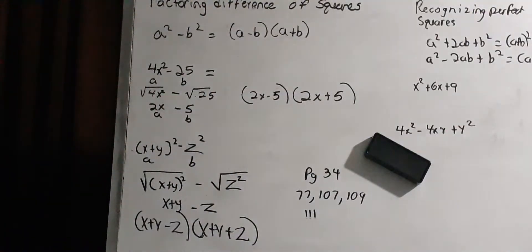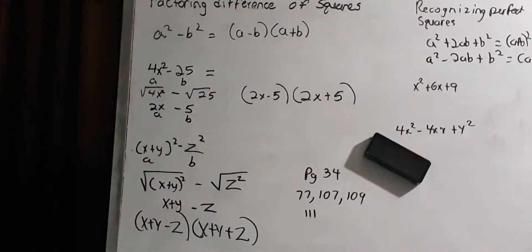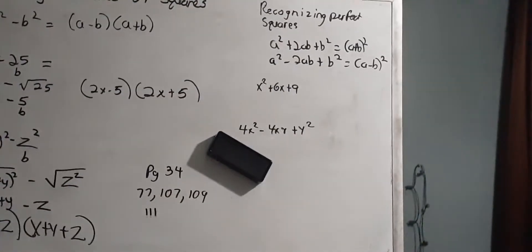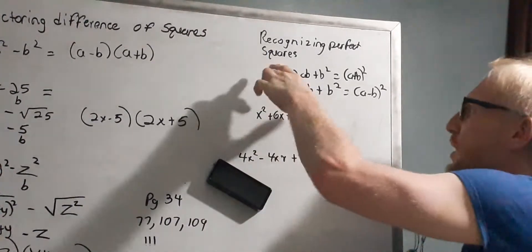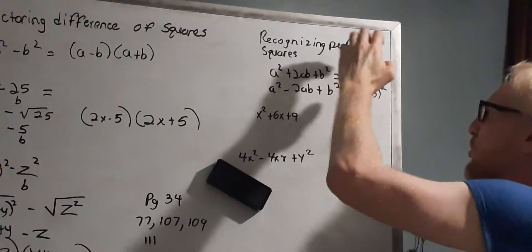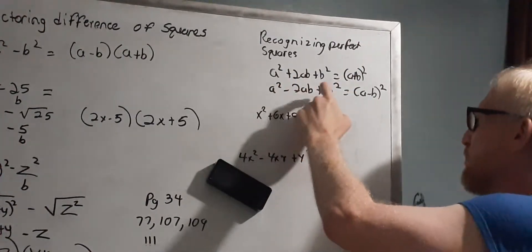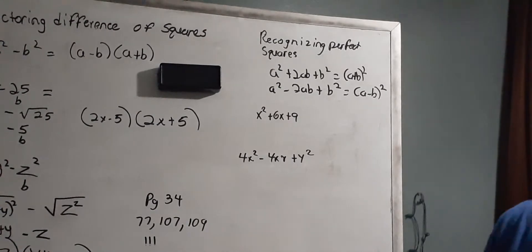Now let's move on to recognizing a perfect square. The formulas for perfect squares are: a squared plus 2ab plus b squared equals (a plus b) squared, and a squared minus 2ab plus b squared equals (a minus b) squared. The process is similar — I want to find the square root of the first term and the square root of the last term to determine who is a and who is b.